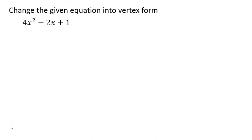It says change the given equation into vertex form — so we're actually given the standard form. In order to change into vertex form, we're going to apply the first two steps for graphing in standard form. Step 1 is to find the AOS or axis of symmetry, and step 2 is to find the vertex. Once we have the vertex, we can switch into vertex form.